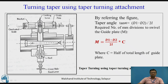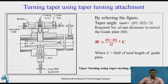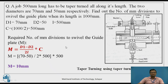The derivation for the taper turning attachment is simple. We know tan α = (d1 − d2) / 2L, where d1 and d2 are the major and minor diameters and L is the taper length. The required number of mm divisions to swivel the guiding plate is given by: m = [(d1 − d2) / 2L] × c, where c is half the length of the guiding plate.